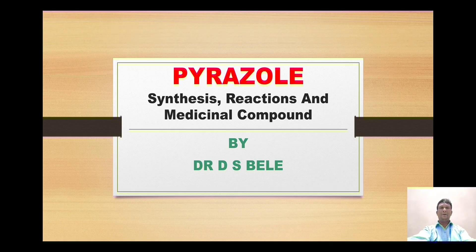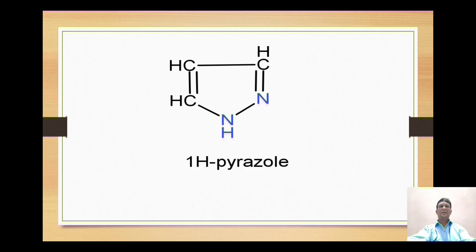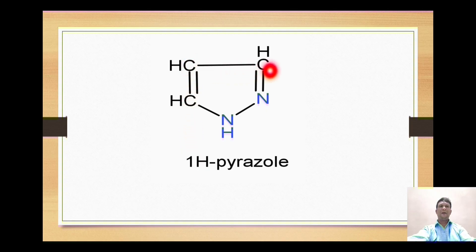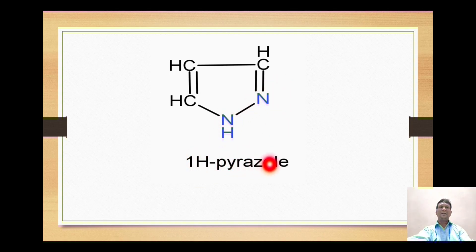Today's topic is the heterocycle pyrazole. We will go through the synthesis, reactions, and some medicinal compounds of this heterocyclic nucleus. It is a five-membered ring containing two nitrogens at positions one and two, adjacent to each other, along with three carbons and four hydrogens. Its molecular formula is C3H4N2.